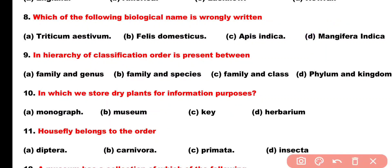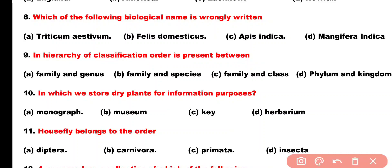Question number 9. In the hierarchy of classification, order is present between: Option A: Family and Genus, Option B: Family and Species, Option C: Family and Class, Option D: Phylum and Kingdom. Correct answer is Option C. Order is present between family and class.